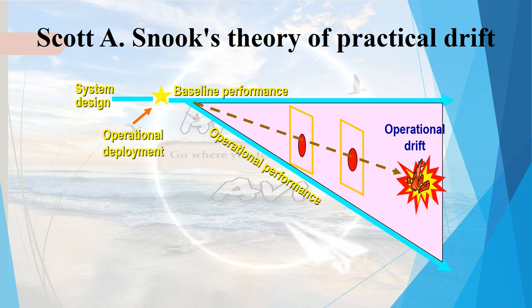Practical drift refers to the gradual departure from an intended course of action due to external influences. This operational drift can lead to a catastrophic incident or accident, even though defenses such as training, regulation, or technology are in place. This again underscores the importance of the safety management system, which keeps in check that such deviation or normalization of deviation does not occur.